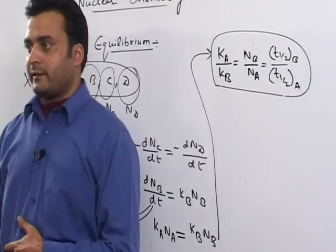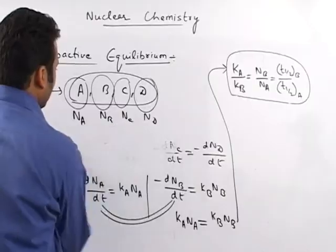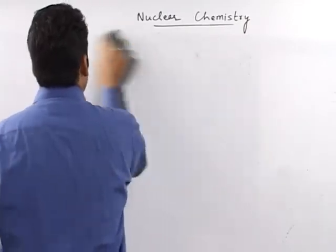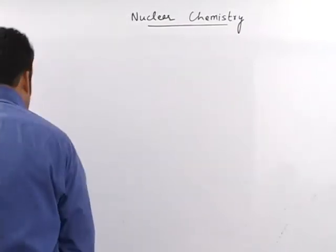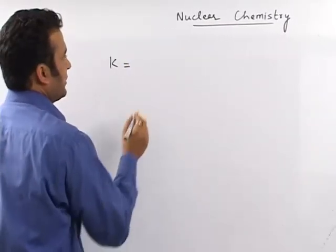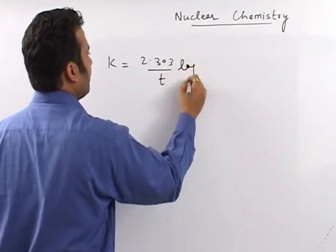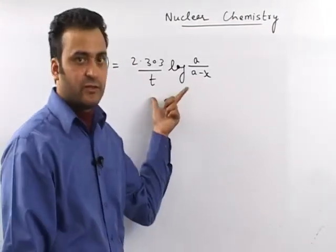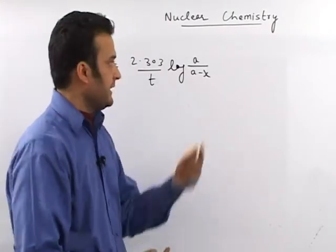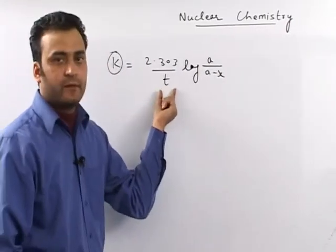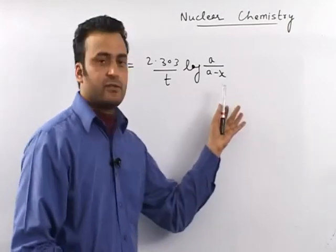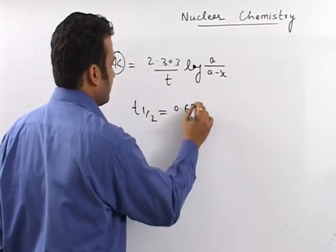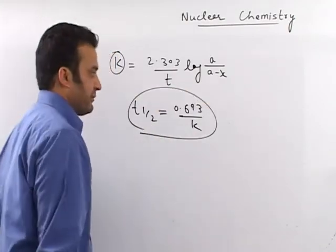To recap the key formulae: k equals 2.303 upon t times log of a upon (a minus x), where a is initial atoms, a minus x is atoms remaining at time T, and x is atoms disintegrated up to time T. The second important formula is t half equals 0.693 upon k.